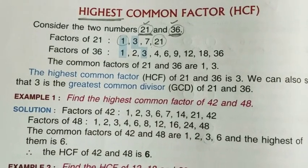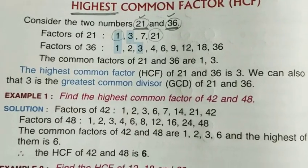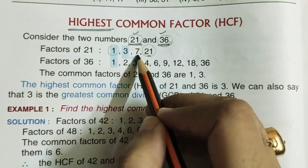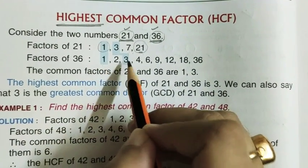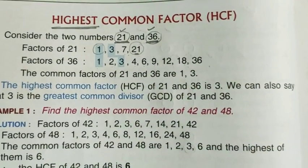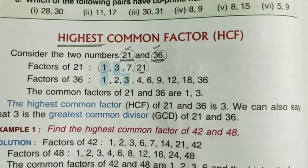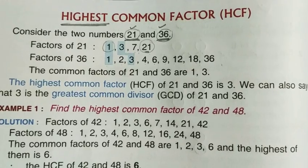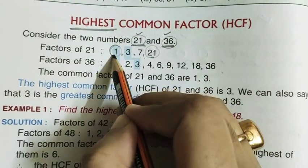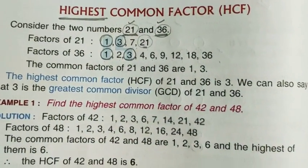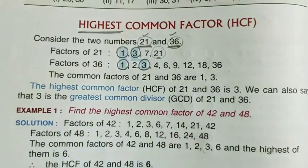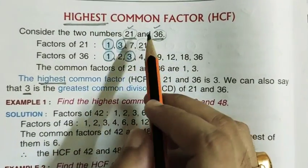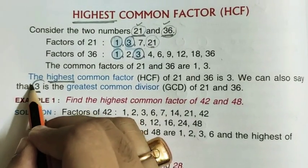Note that for every number, 1 and the number itself are always factors. Now the factors of 36 are: 2, 3, 4, 6, 9, 12, 18, and 36. We start dividing the number with the natural numbers and find which ones divide perfectly — those are the factors. Now find the common factors: they are 1 and 3. Among these common factors, the highest one is obviously 3. So the HCF, or Highest Common Factor, of these two numbers is 3.